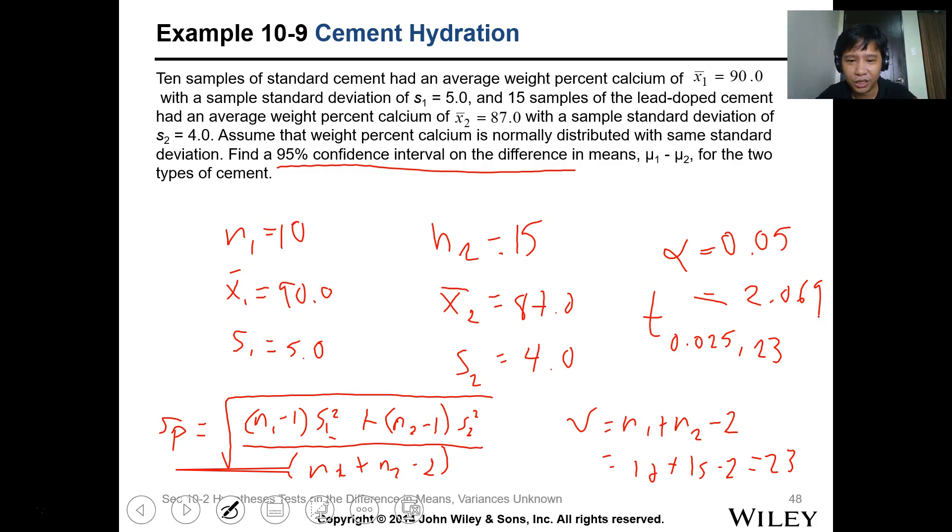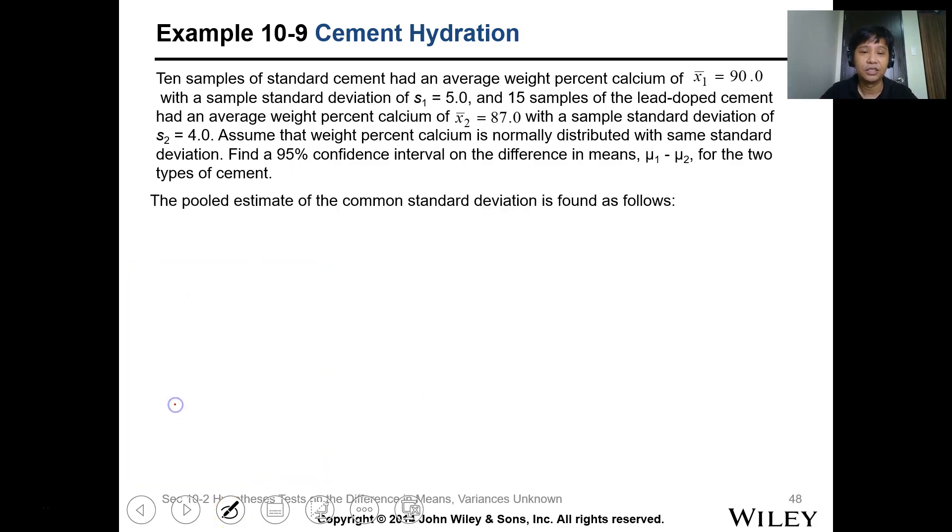For sp, substitute the values. So that will be 9 times 5 squared plus 14 times 4 squared divided by 23. So this is 4.4183. So we got sp, it's squared. When you need the square root, it's 4.4, that's the summary.